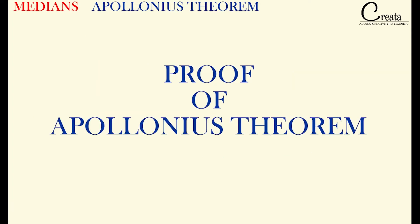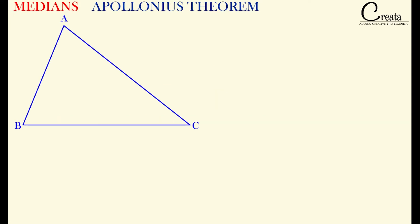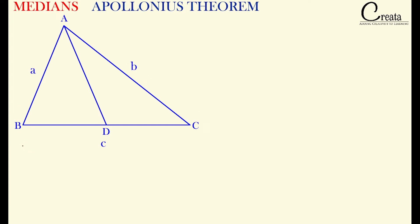Let's check the proof of this theorem — this is very important. It will help you in solving many questions related to the length of the median and side of the triangle. Let's take a triangle ABC with median AD. D will be the midpoint, so BD = DC. Let's take the sides of this triangle as a, b, and c, and denote the median as x.